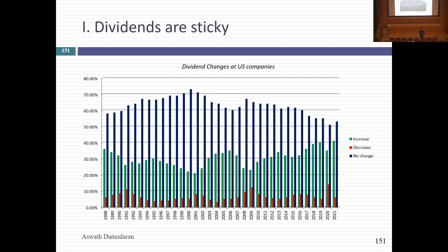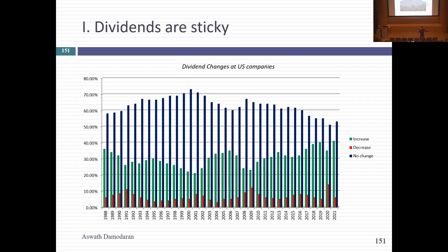Even in really bad years like 2008 and 2020, dividend increases outnumbered dividend decreases. In 2020, the entire global economy got shut down, and there were more decreases than usual — but increases still outnumbered decreases. If you characterize dividend policy in most companies, what they pay is similar or equal to what they paid last year, and if it changes, it's more likely to increase than decrease. Dividends are sticky.